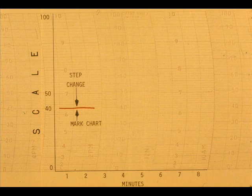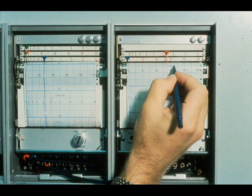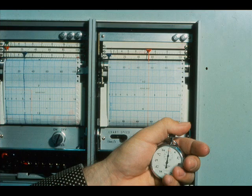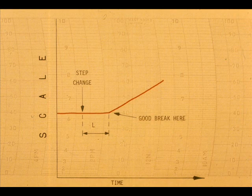Mark the chart at the exact time the manual step change is made — make the mark plainly. Use a stopwatch and measure the time where the response begins to make a change, and mark the chart again. This is time L. Watch the stopwatch and put a third mark on the chart equal to 2L. Try to time L where the curve makes a good, clean break.